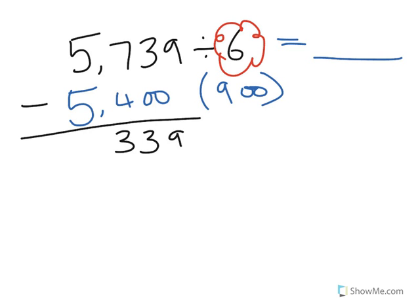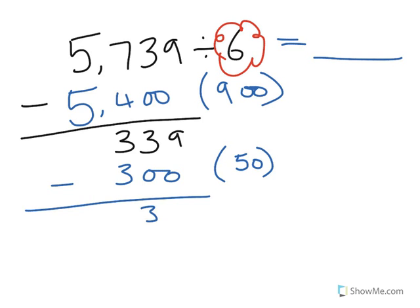And I continue with 339 and think again, how many lots of 6 can I get rid from it? And I can get rid of 300. Now, when you've got zeros at the end there, it's easy to get confused with how many lots of 6 I've used there. But 5 lots of 6 gives me 30, so 50 lots of 6 would give me the 300 here. So I can take that away from 339 and leave me with 39.